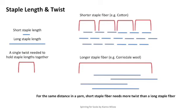If you look at this illustration, the blue line represents the staple length of a given fiber — it's going to require more twist if it's shorter compared to if it's longer. The one on top is more like a cotton yarn, where the fibers are very short, about an inch or so in length.